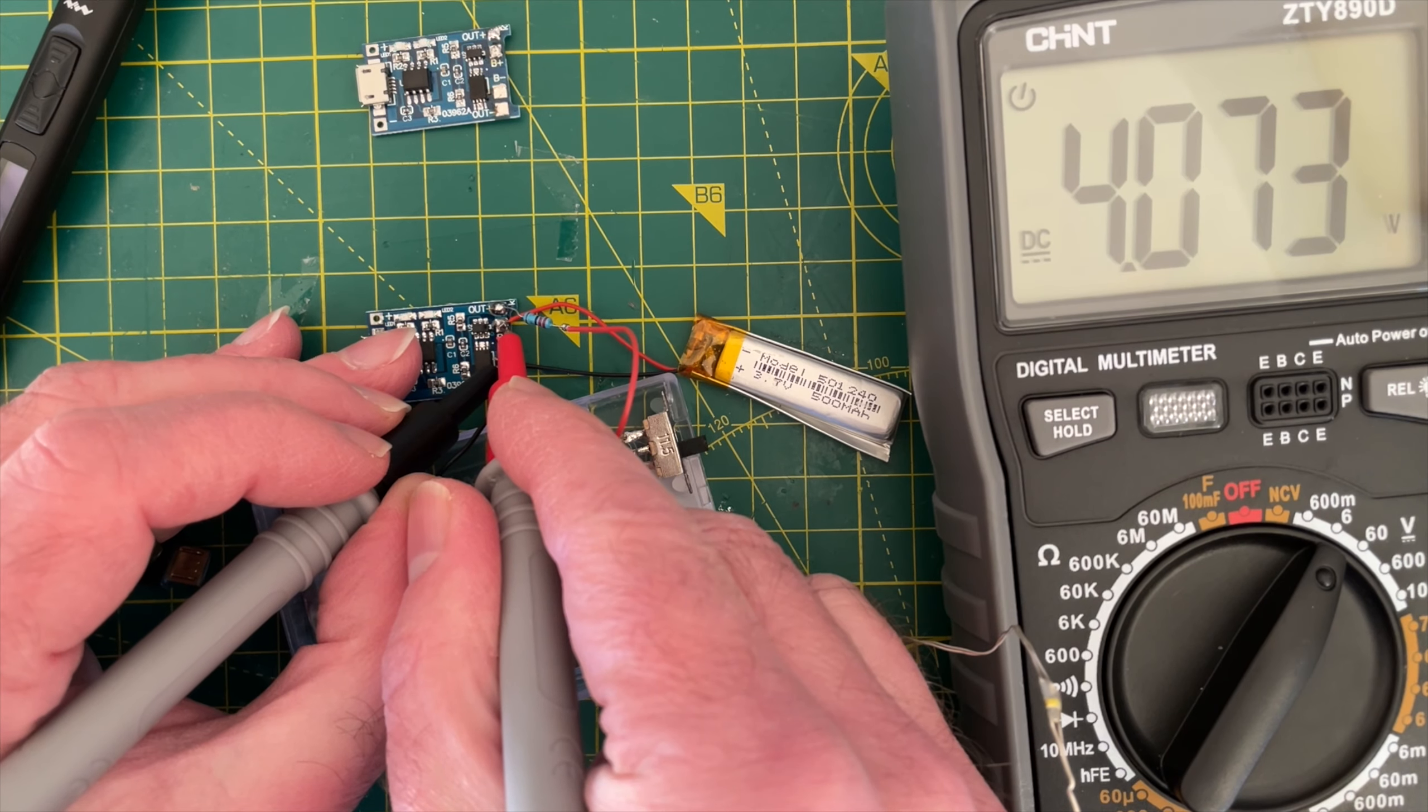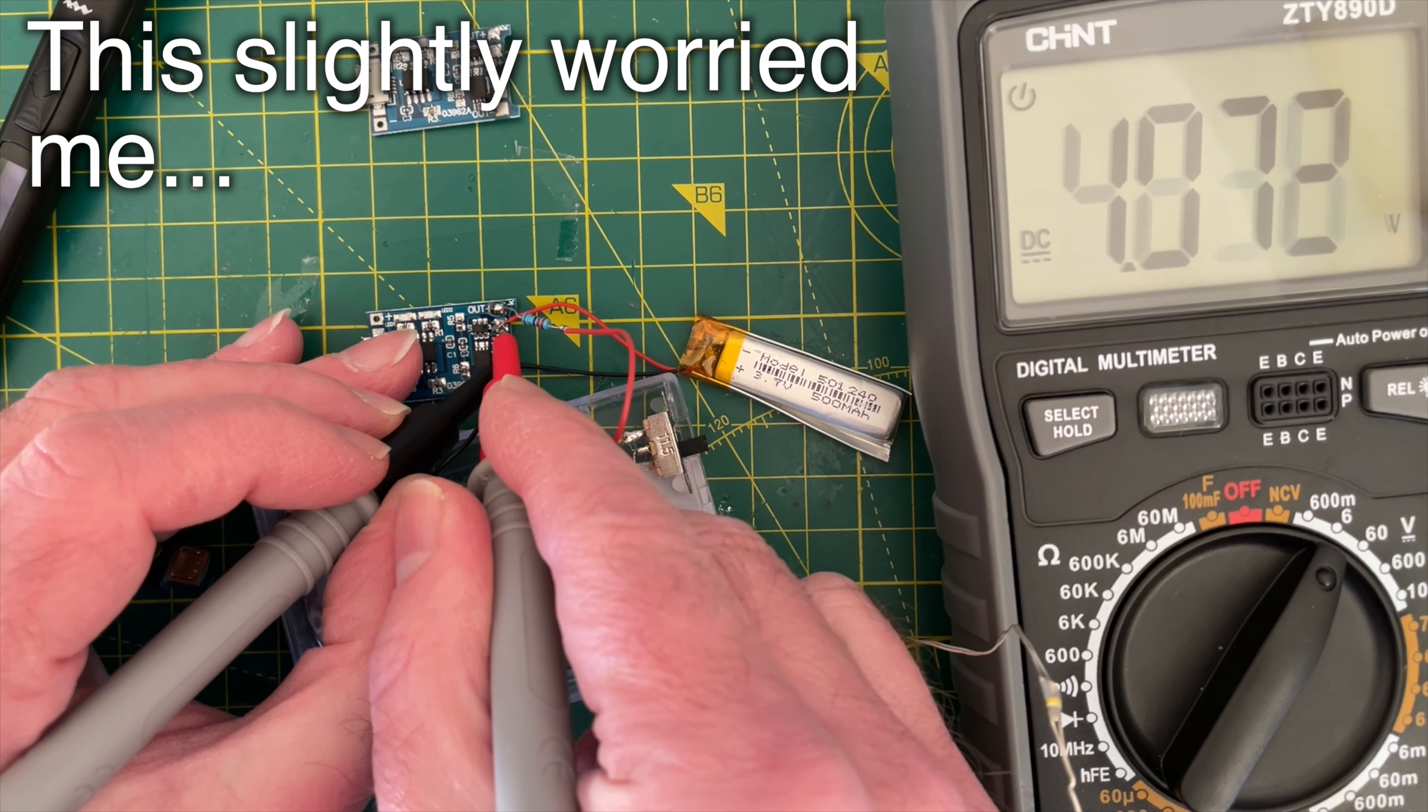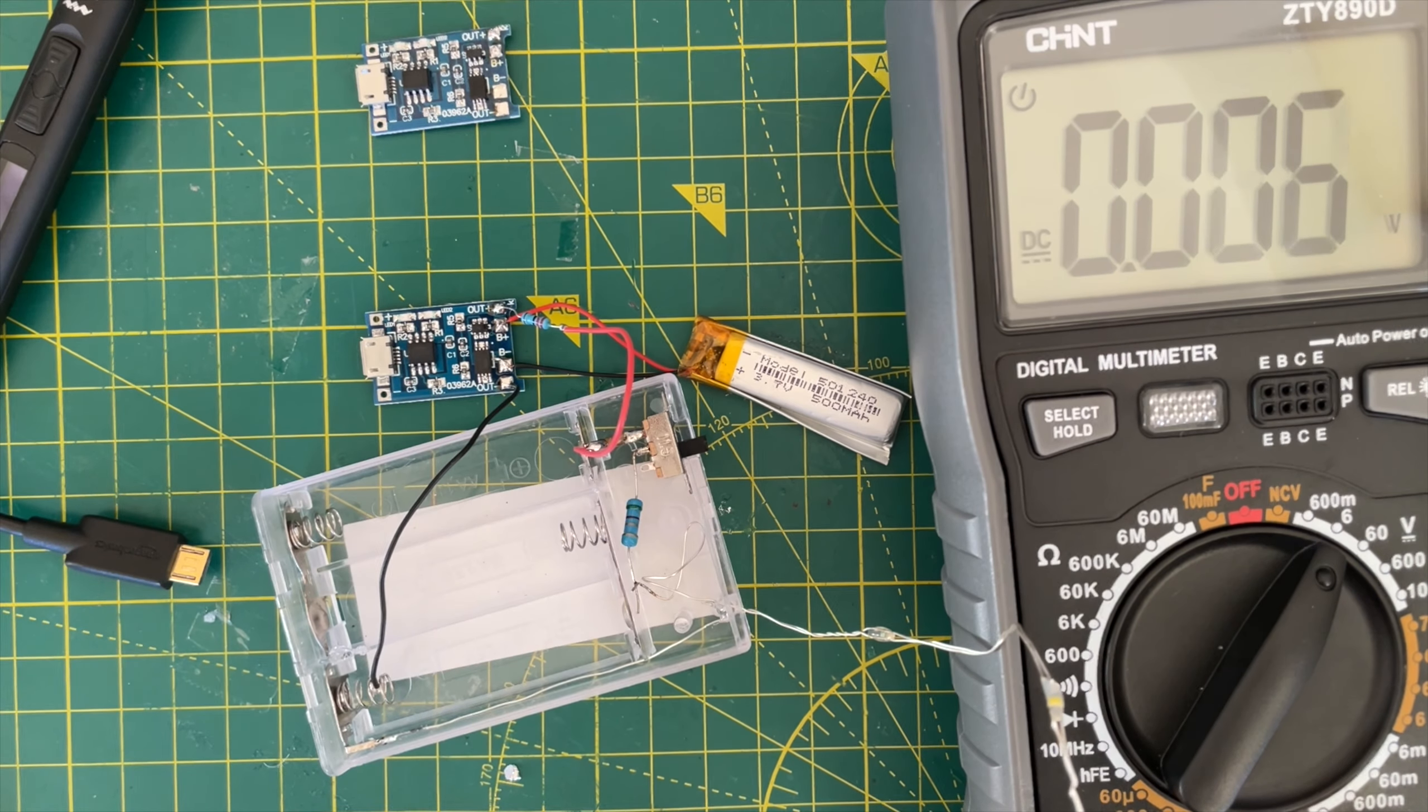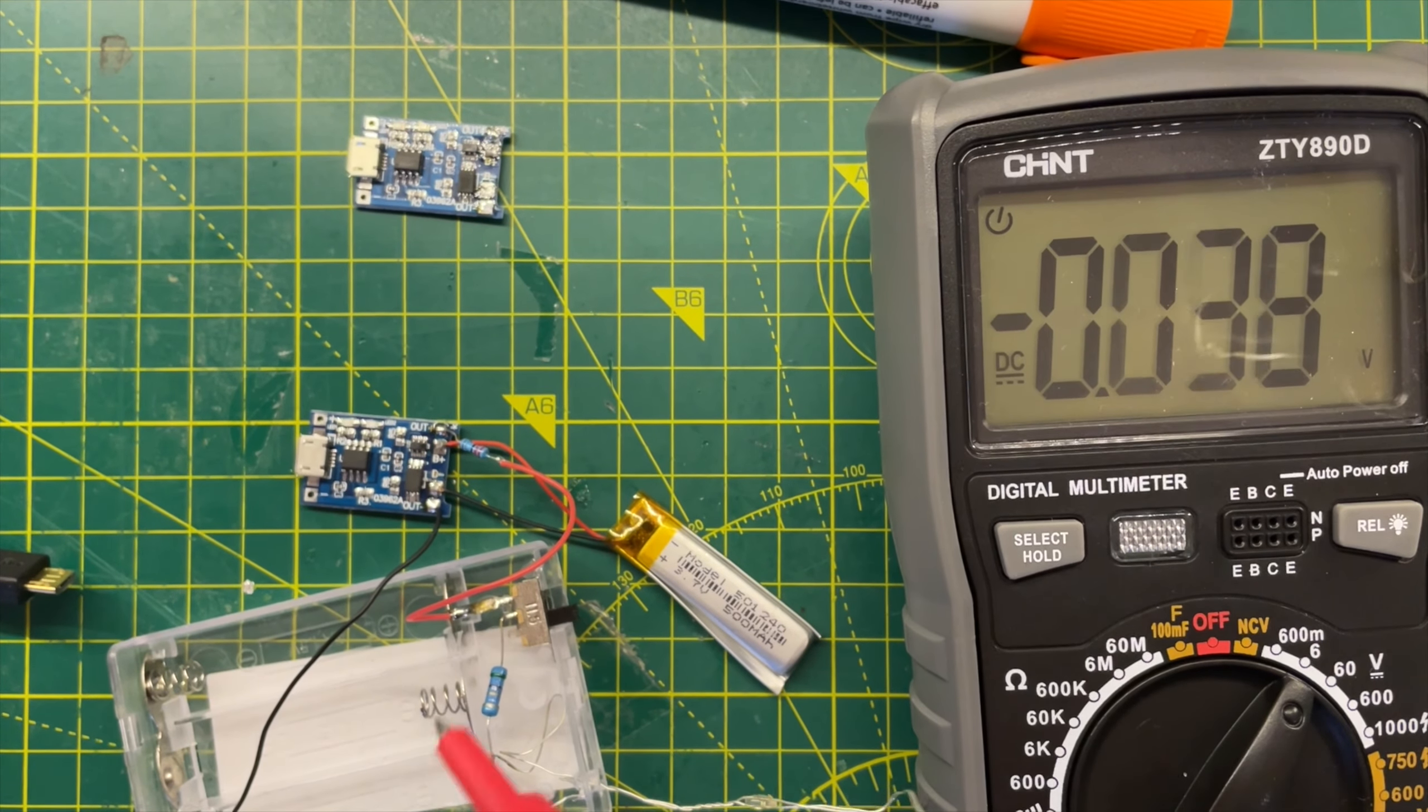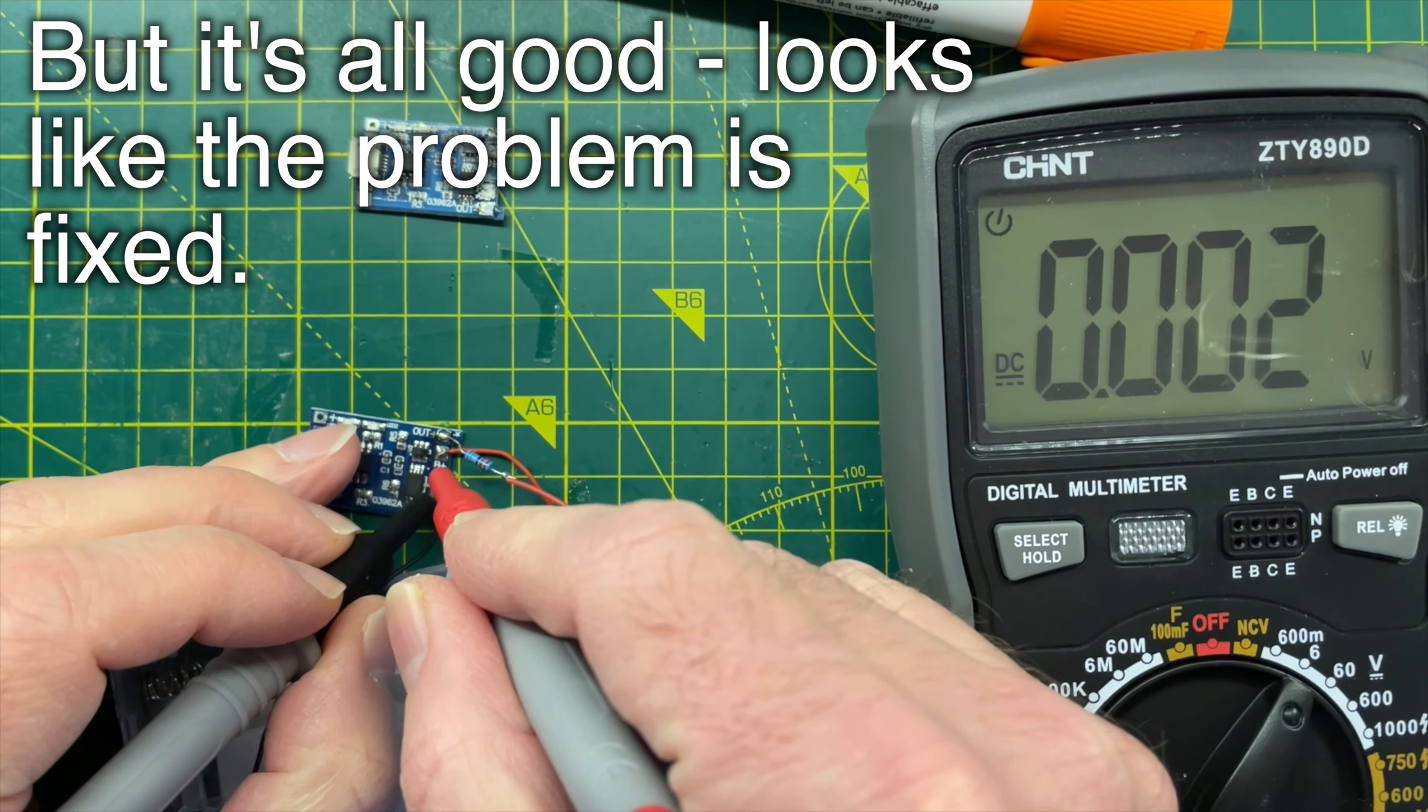So I charged up the battery with the new board and left it. The voltage did drop down to 4.07 volts after a few hours, which made me think maybe this battery wasn't actually as good as my salvaged one. But even after leaving it overnight, the battery still had 4.07 volts. It had held its charge. Perfect.